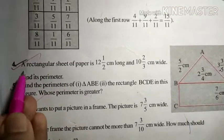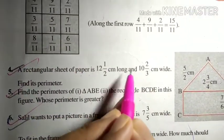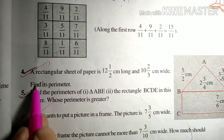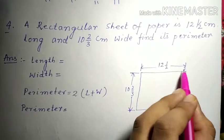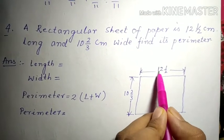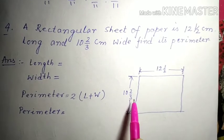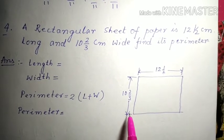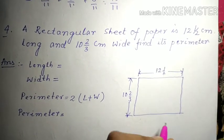Question number 4 is: A rectangular sheet of paper is 12 1/2 cm long and 10 2/3 cm wide. Find its perimeter. Now let's understand. So this is a rectangular sheet of paper and its length is 12 1/2 and its breadth is 10 2/3. And we have to find the perimeter. Perimeter basically means the sum of all length and breadth. So now let's write.